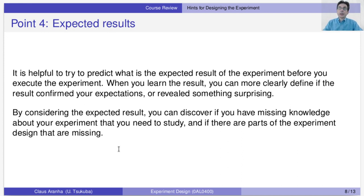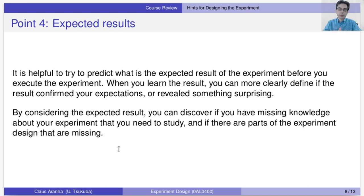After defining your output variable and factors, I recommend trying to predict the expected results of the experiment before you execute it. When you learn the actual result, you can compare it with your prediction and see if results confirm your expectations or reveal something surprising. Without predicting results beforehand, we tend to think whatever result occurred was obvious all along, potentially missing surprising and interesting findings. This also helps you discover missing knowledge and identify gaps in your experiment design.